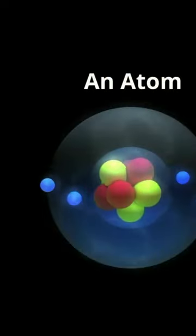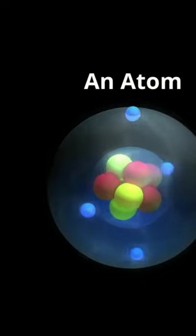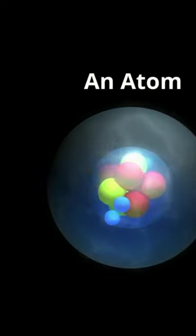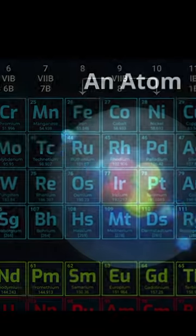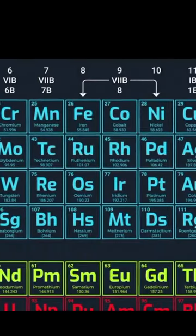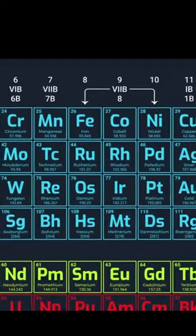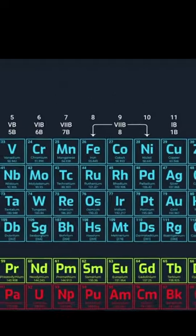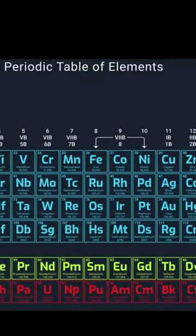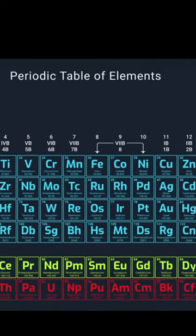Most of the matter in the universe is made up of atoms. A substance that is made up of only one kind of an atom is called an element. You can find all the elements in the periodic table of elements.